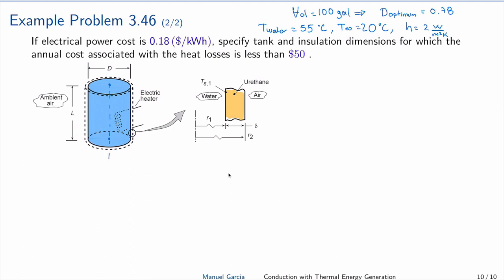This problem consists of a cylindrical water heater tank with a capacity of 100 gallons. The temperature of the water is maintained at 55 degrees C, and the temperature of the outside is 20 C.